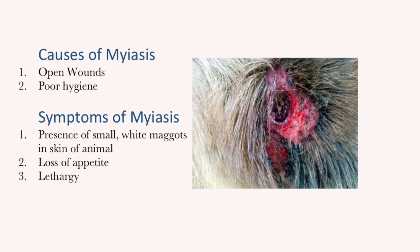The symptoms of myiasis can differ on a case-by-case basis. The most unmistakable indicator of myiasis is the observance of small white maggots in the skin of the animal. In some cases, the fur of the animal may obscure the wound, so maggots may not be spotted. Other symptoms include loss of appetite and lethargy in the animal.